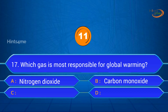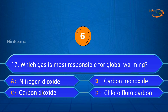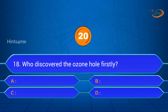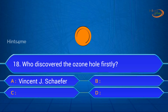Question 17: Which gas is most responsible for global warming? A. Nitrogen dioxide, B. Carbon monoxide, C. Carbon dioxide, D. Chlorofluorocarbon. Answer: C. Carbon dioxide.